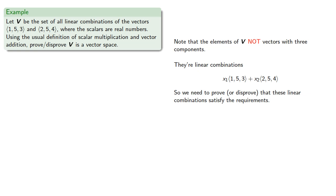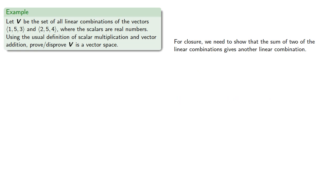So let's go through those requirements one by one. For closure, we need to show that the sum of two of the linear combinations gives another linear combination. So we could set it up this way: we start with two vectors in V and show their sum is also in V.